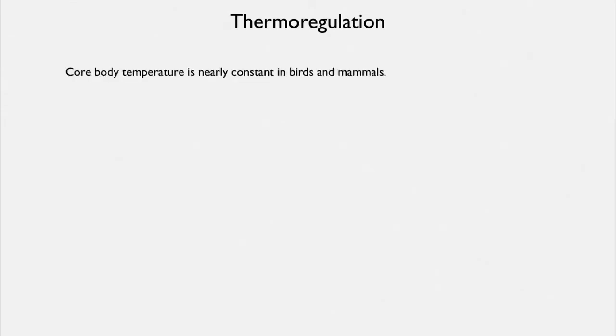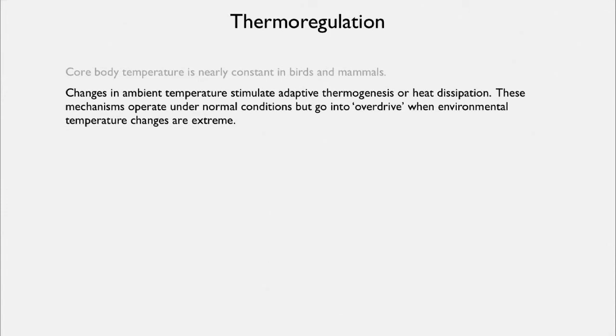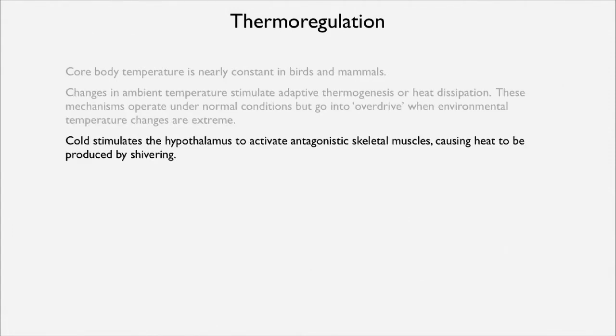What about thermoregulation and what happens to us in either extreme heat or extreme cold? Core body temperature is nearly constant in birds and mammals, and any change in ambient temperature is going to stimulate either adaptive thermogenesis or heat dissipation. These mechanisms operate under normal conditions but really go into overdrive when environmental temperature changes are extreme.